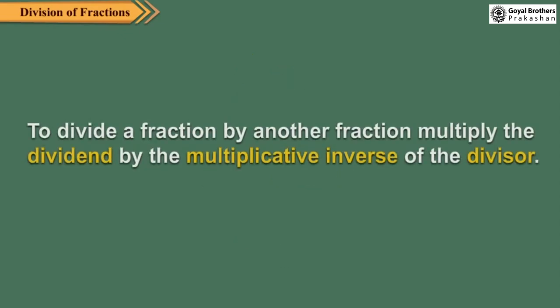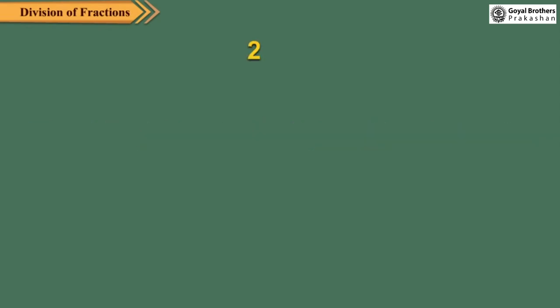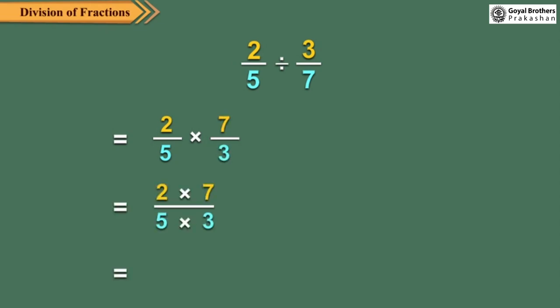To divide a fraction by another fraction, multiply the dividend by the multiplicative inverse of the divisor. Let us divide 2/5 by 3/7. Since the multiplicative inverse of 3/7 is 7/3, so we get...